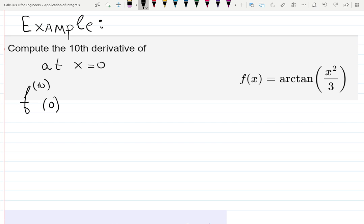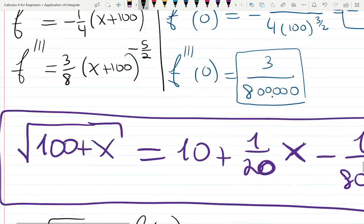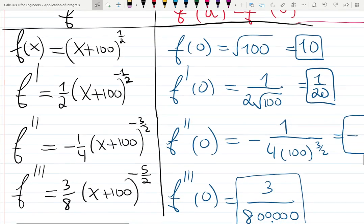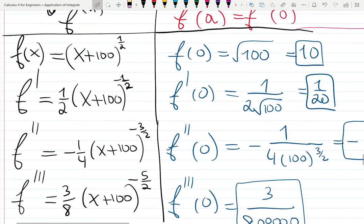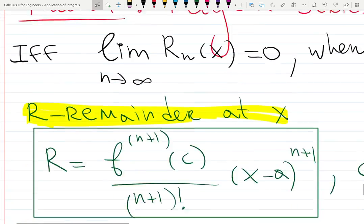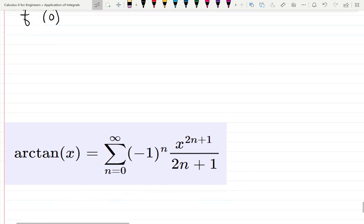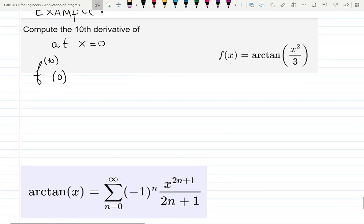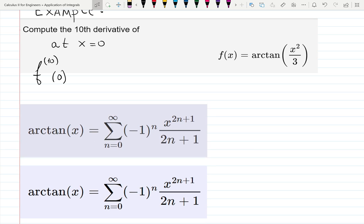Either you first find the series for arctangent function. You can do it like we did in an example before by actually evaluating the derivatives. But you can also look at the book. In the book, there is a formula for arctangent. Arctangent has a power series, a Maclaurin series, which is sum minus 1 to the n x 2n plus 1 over 2n plus 1 from 0 to infinity. This formula will be used for this example.